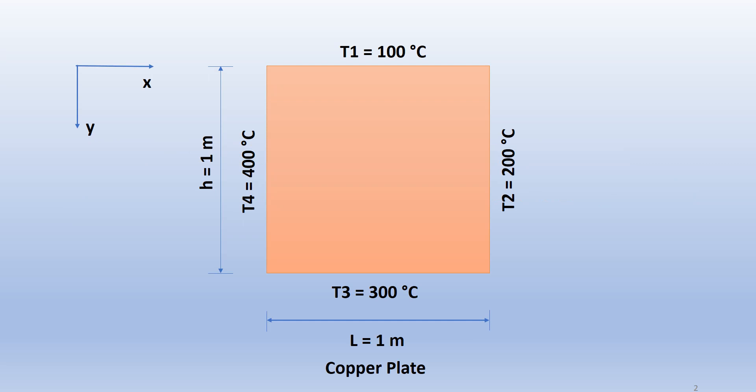The temperatures at the sides of the copper plate are fixed as shown here: T1 equals 100 degrees Celsius at the top side of the plate, T2 equals 200 degrees Celsius at the right hand side of the plate, T3 equals 300 degrees Celsius at the bottom side of the plate, and T4 equals 400 degrees Celsius at the left hand side of the plate. The X and Y coordinates are shown here.